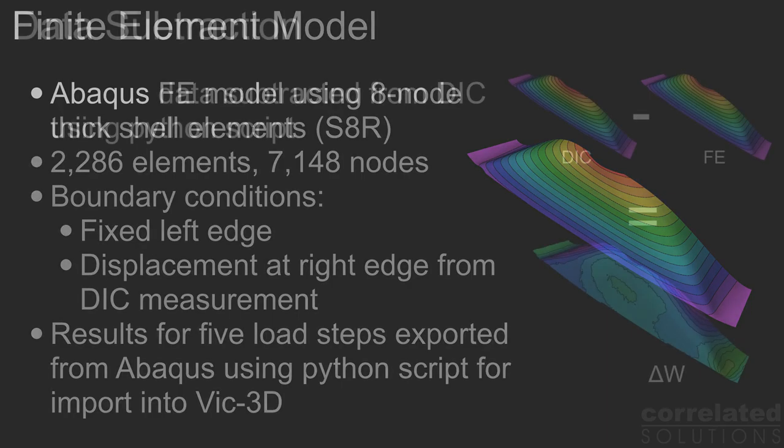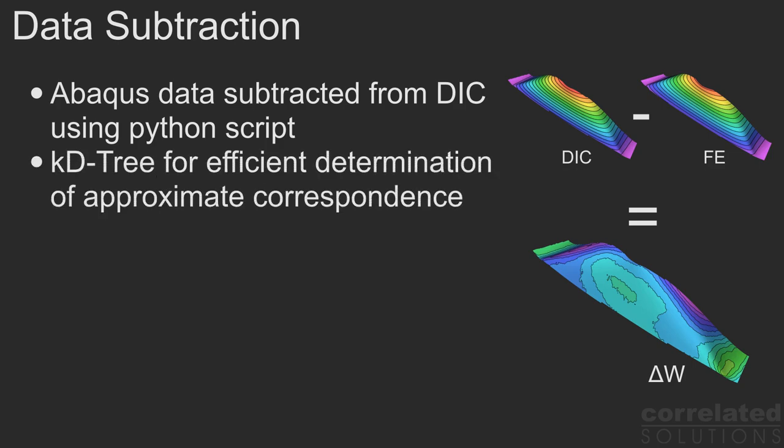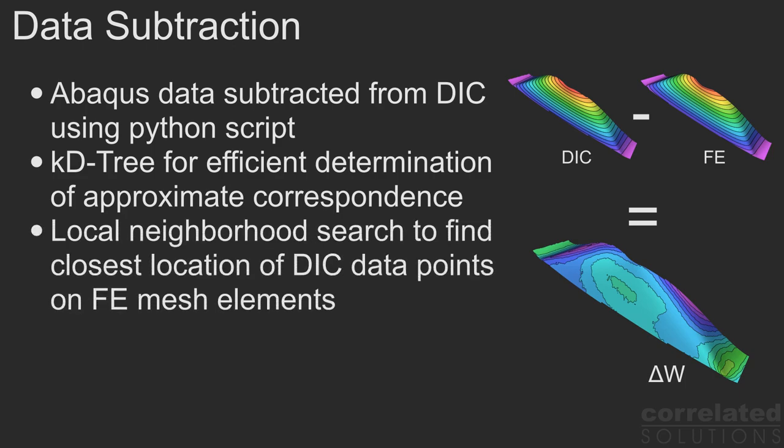For the actual data subtraction, we used another script that is part of the VIC-3D Python integration module. The script uses a KD tree for efficiently finding an approximate correspondence and then determines the closest point on the FE mesh by searching a small neighborhood.